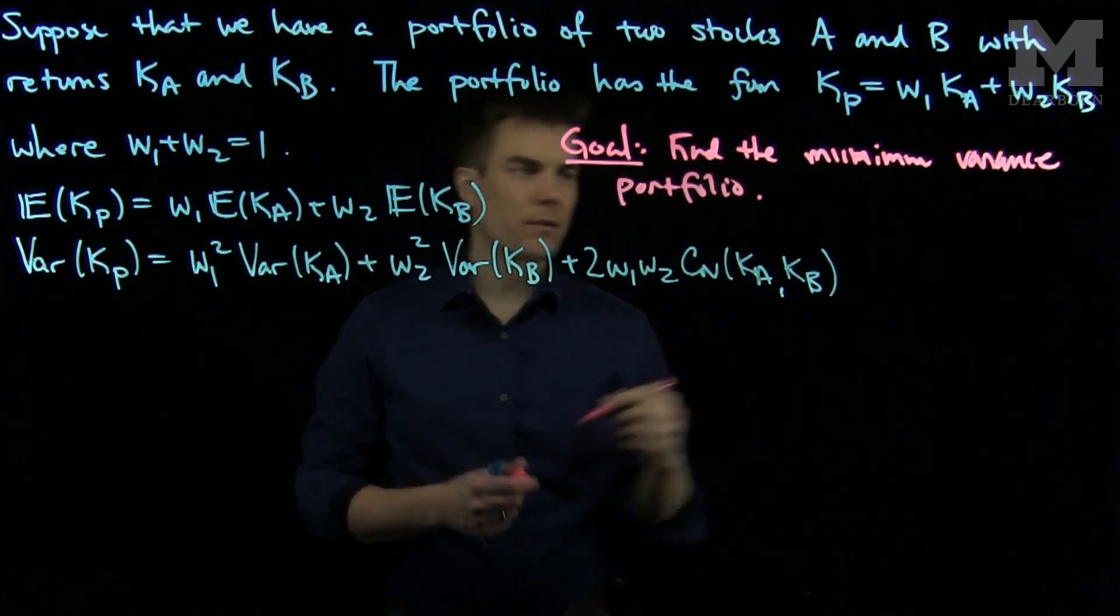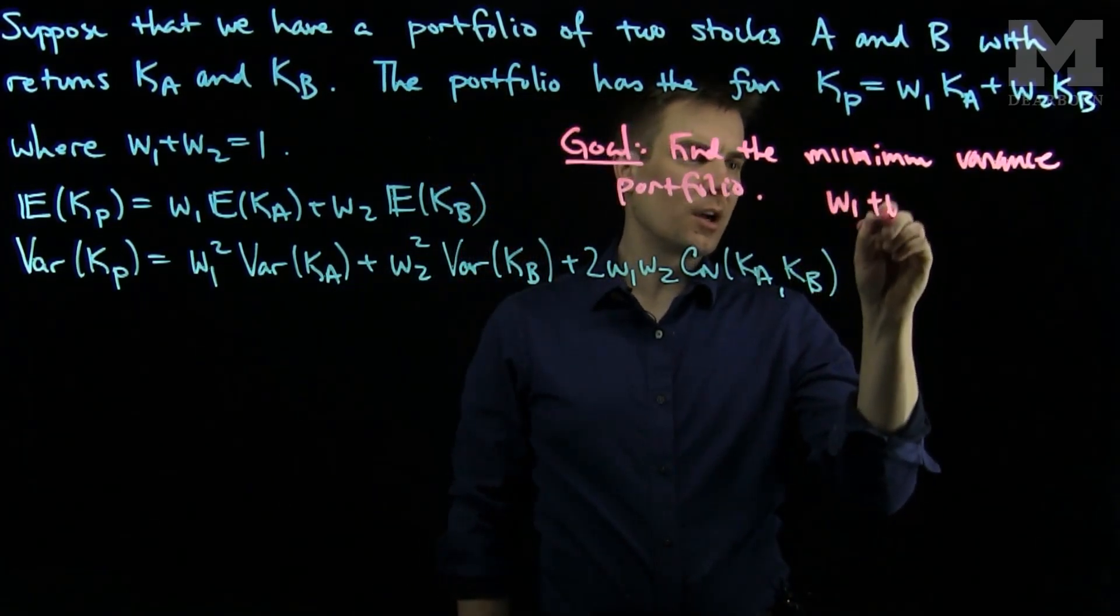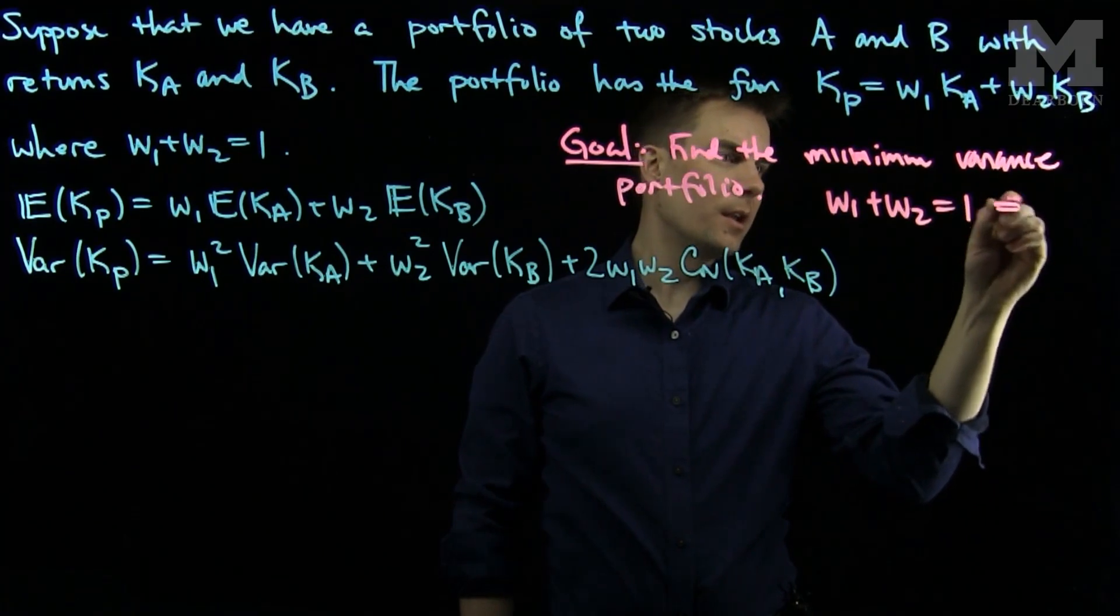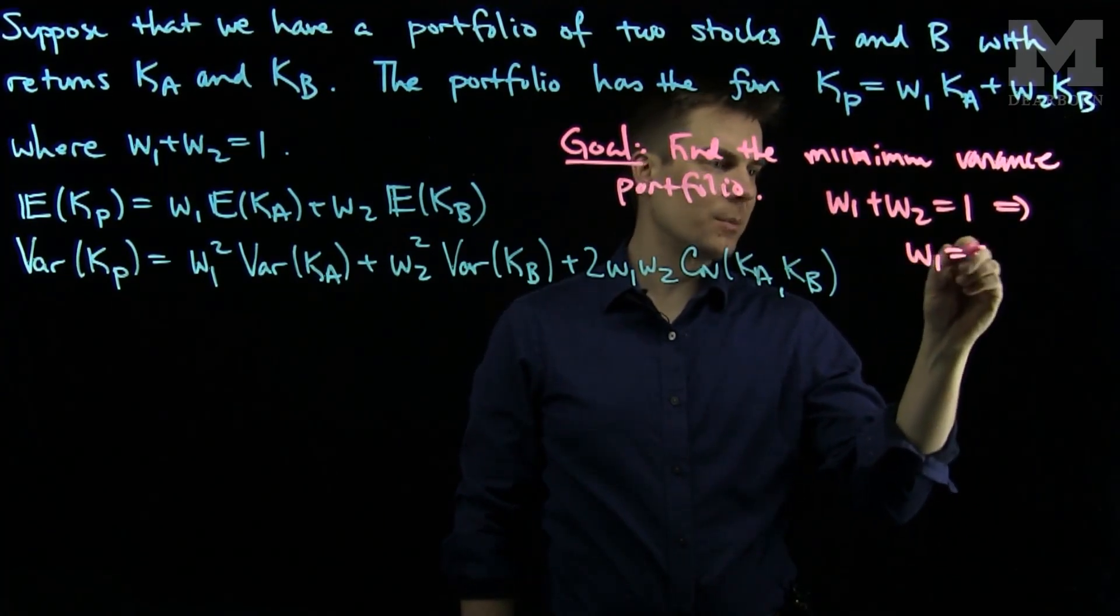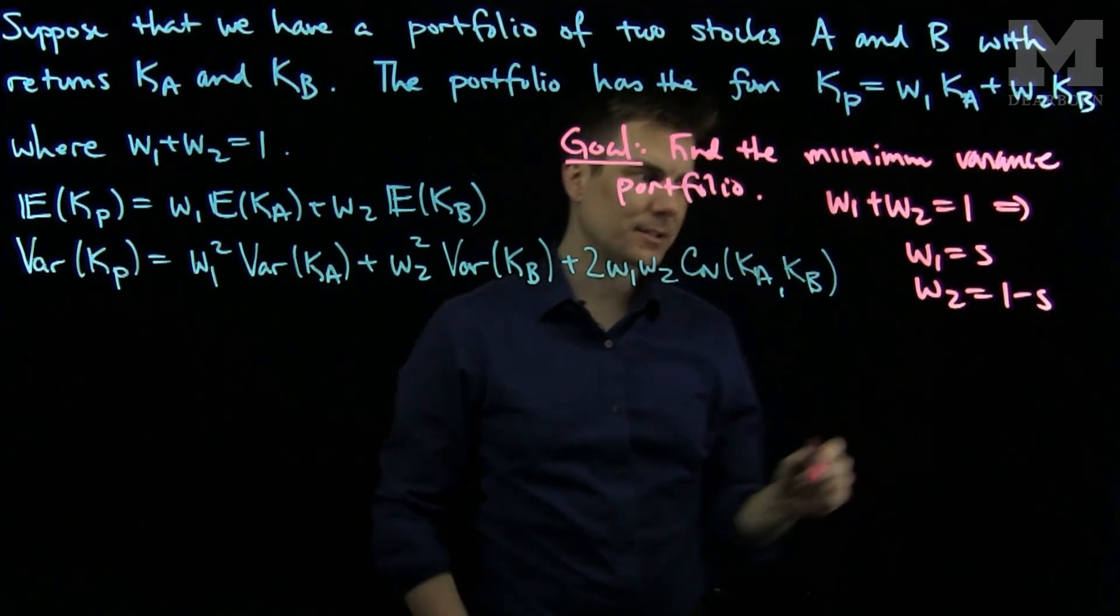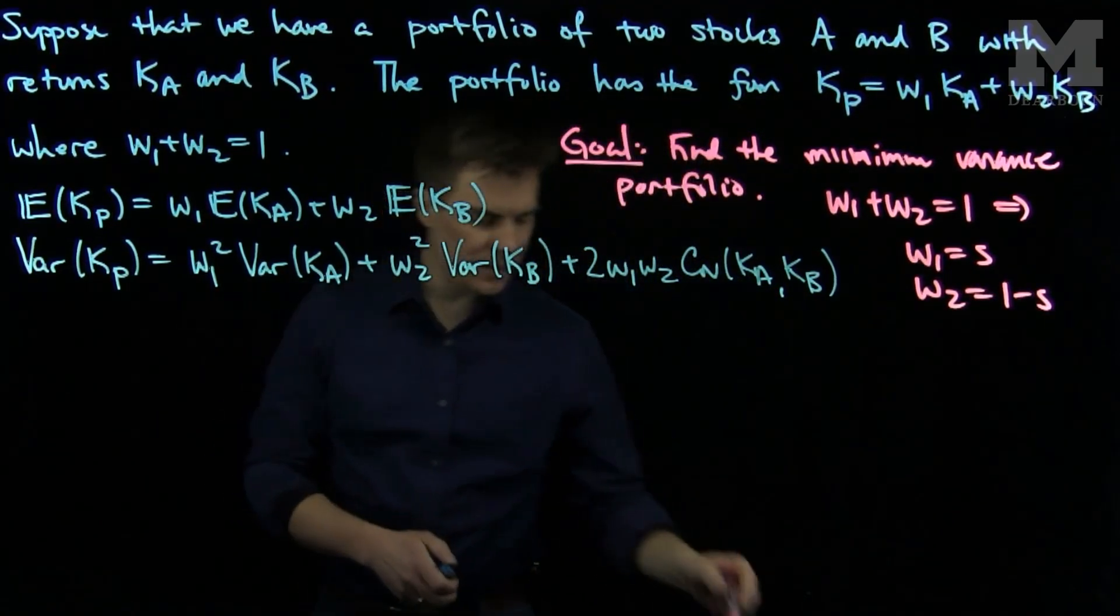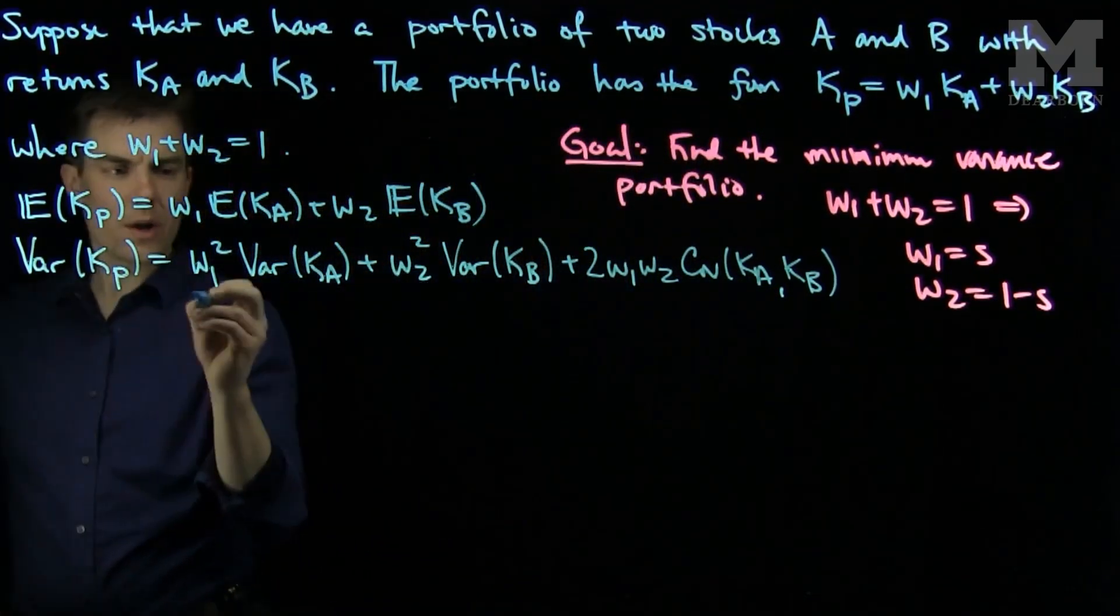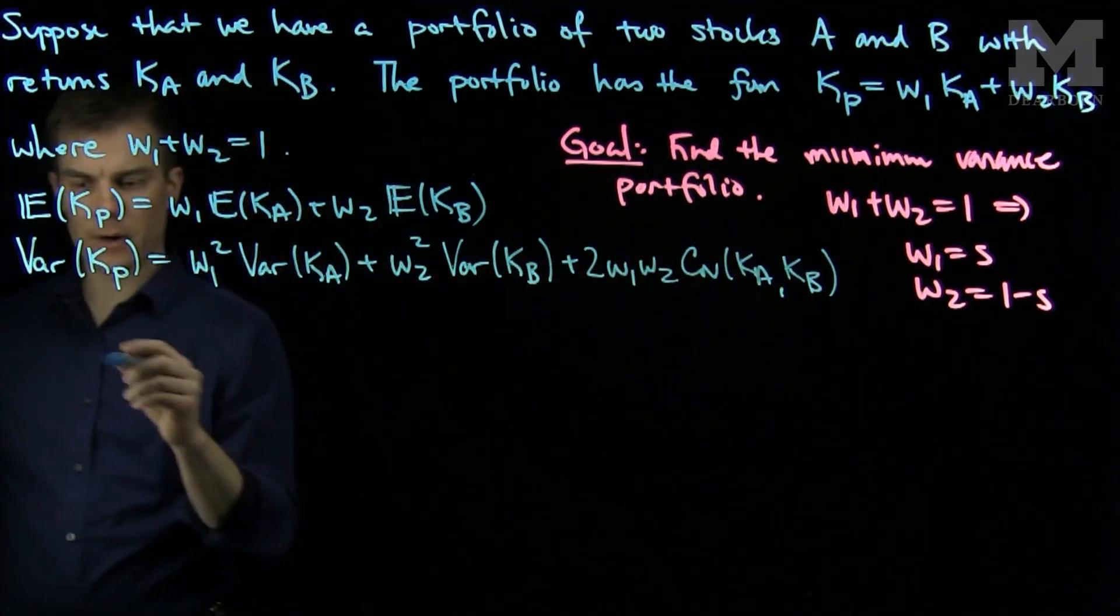So to do this, we can observe that W1 plus W2 equals 1 implies that we can take W1 to be a parameter S and W2 will therefore be 1 minus S. So to minimize this, it suffices to minimize this expression over here.